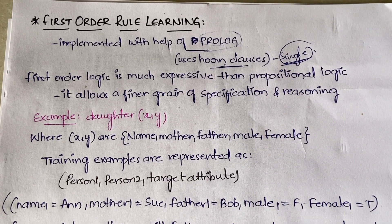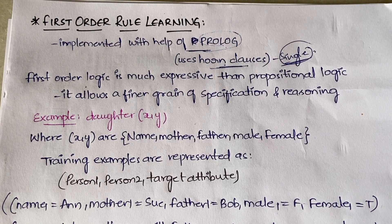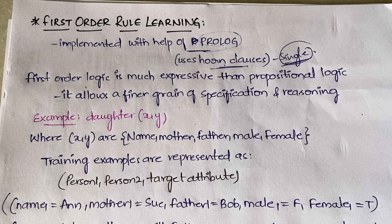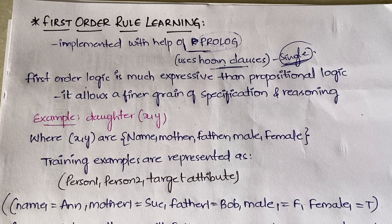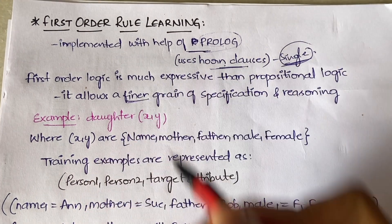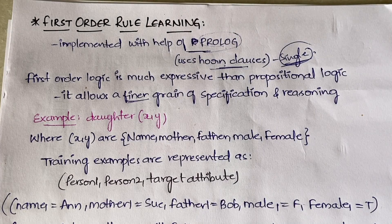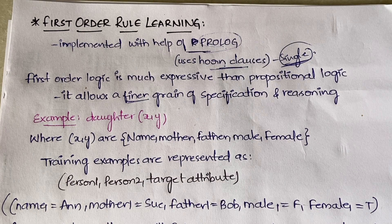First order logic is much more expressive than propositional logic. The reason you use first order logic even after having propositional logic is that it is more expressive. It also allows a finer grain of specification and reasoning. Finer grain means more detailing, compared to coarse grain which does not have as much detailing.